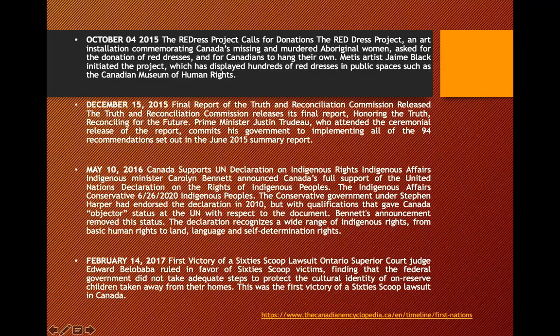On December 15, 2015, the final report of the Truth and Reconciliation Commission — 'Reconciling for the Future' — was released to Prime Minister Justin Trudeau, who attended the ceremony. He committed his government to implementing all 94 recommendations set out in the June 2015 summary report. This is still on hold. There are areas that were attached, but not implemented as promised — it's still being put behind.